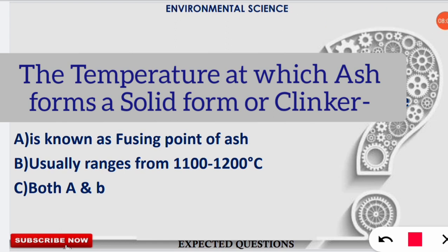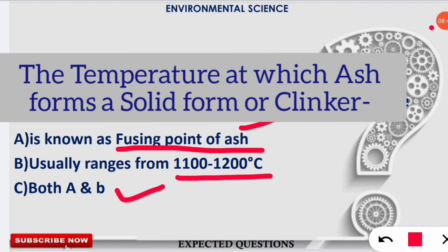The next question asks: the temperature at which ash forms a solid form or clinker is known as what? The correct option is both A and B — it is called the fusing point of ash. The fusing point is the temperature at which ash forms into a solid or clinker, and this typically ranges from 1100 to 1200 degrees Celsius. This is relevant during incineration of waste.